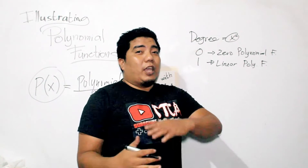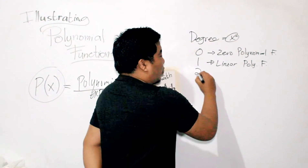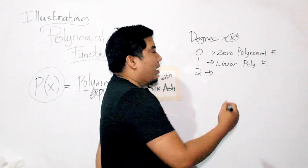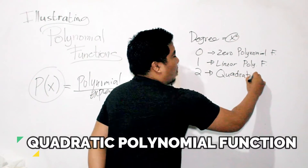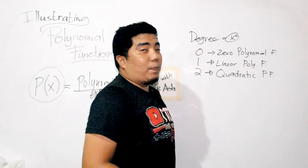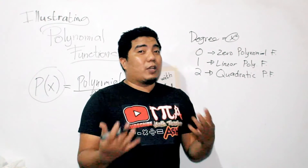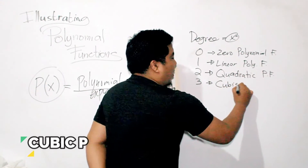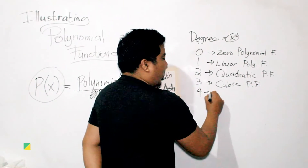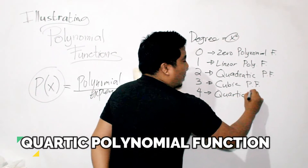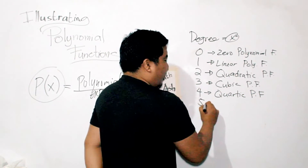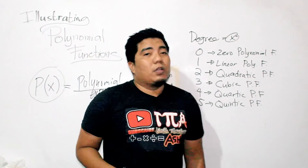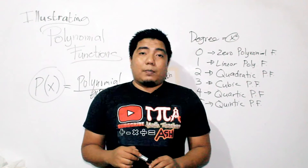If you have a degree of two, meaning the highest exponent is squared, that is known as the quadratic polynomial function — like the quadratic functions in the grade 9 lessons. If you go to the third degree, you have the cubic polynomial function. In the fourth degree, you have the quartic polynomial function. And in the fifth degree, you have the quintic polynomial function. These are the most common types of polynomial functions: zero, linear, quadratic, cubic, quartic, and quintic.